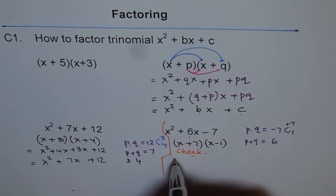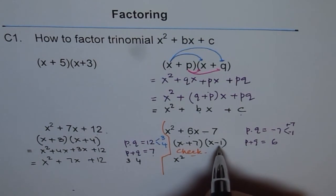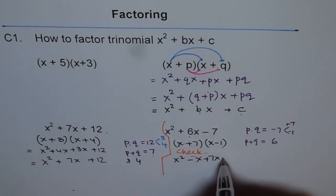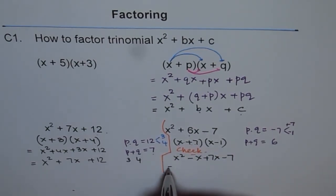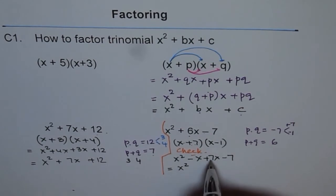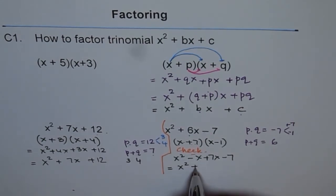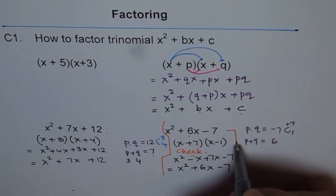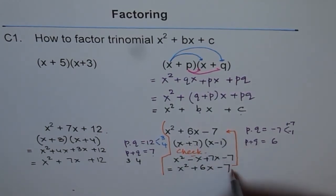x times x is x square. x times minus 1 is minus x. 7 times x is 7x. And 7 times minus 1 is minus 7. That gives us x square. 7x minus 1 is plus 6x minus 7. Now, do you see that? It is exactly the same.